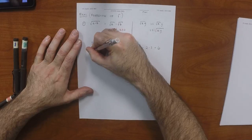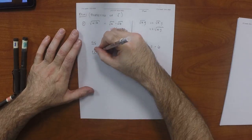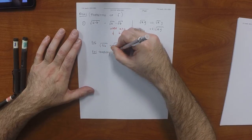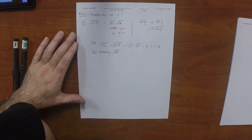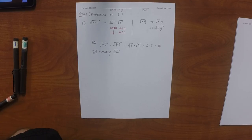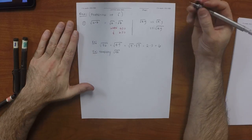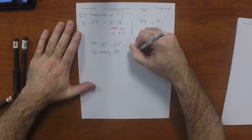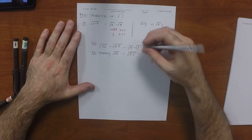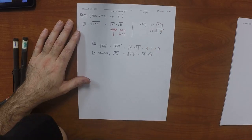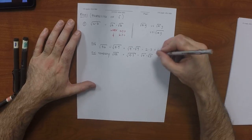Another example: simplify the square root of 12 as much as possible — make the number inside the radical as small as possible. Can we factor 12? Four times three. So we get the square root of four times the square root of three. The square root of four is one of the things we know: it's two. So this would be two times the square root of three.